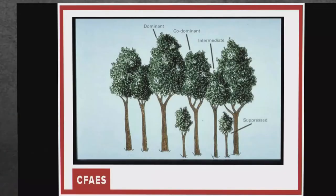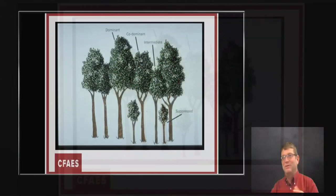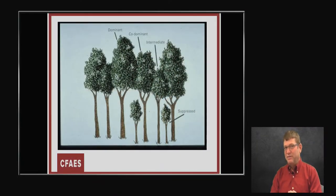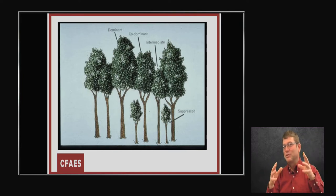So how do we decide what a crop tree is? If you look at trees in the understory, those are probably not the ones you're going to manage. If you pick one of those, you'd have to open the forest so much to get light to them that you'd damage the main canopy. You want trees that are dominant or co-dominant — ones already up in the canopy. Ideally the bigger trees you pick, the quicker you'll get results. Intermediate trees are a little more iffy; the odds are lower, but if you release several intermediates you could get some of them up into the canopy.